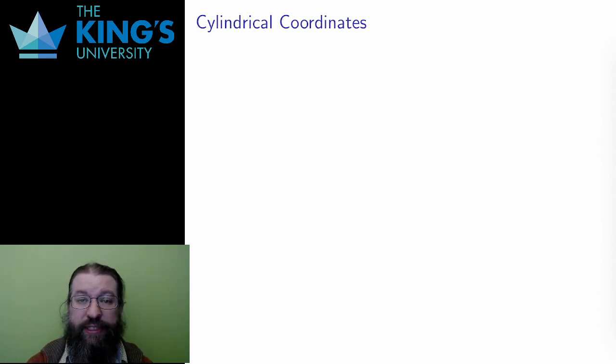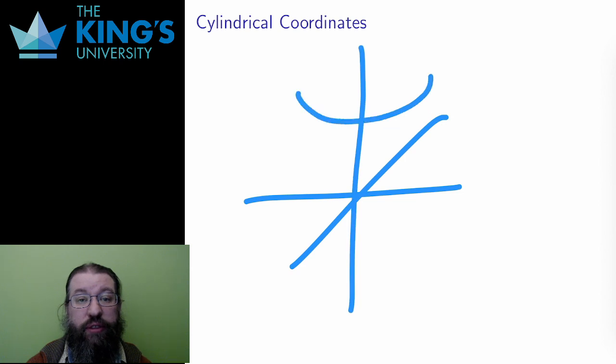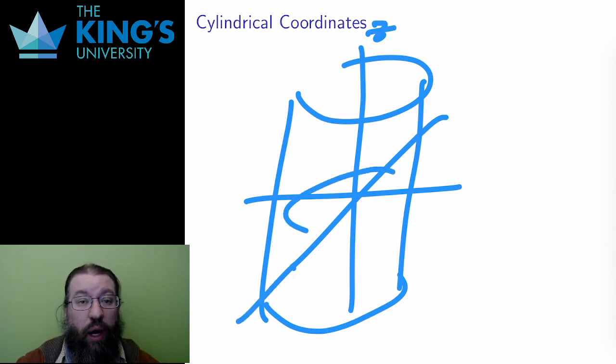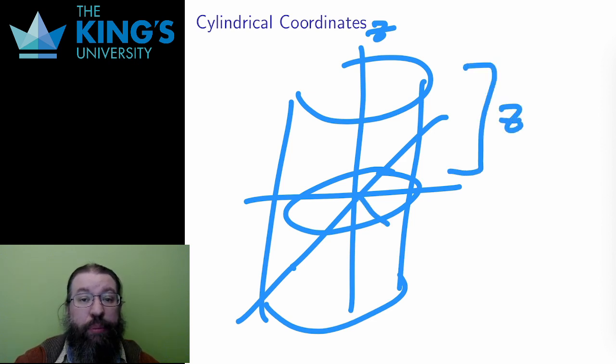First is cylindrical coordinates. As the name implies, the idea is based around a cylinder. Specifically, every point in R3 can be identified as a point on a cylinder oriented along the z-axis. Cylindrical coordinates is essentially polar coordinates for x and y, and then the usual coordinate for z. It identifies points on a circle, and then a height above that circle.